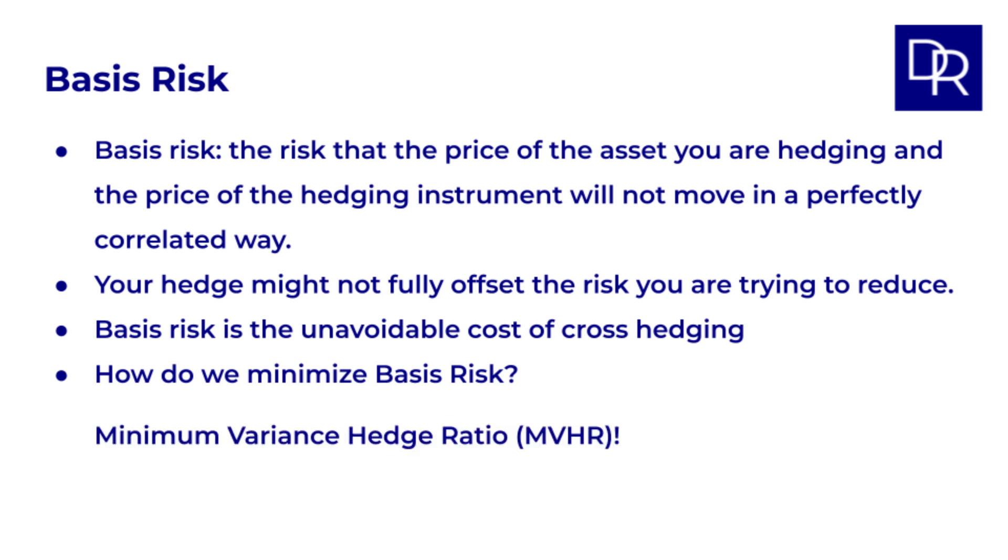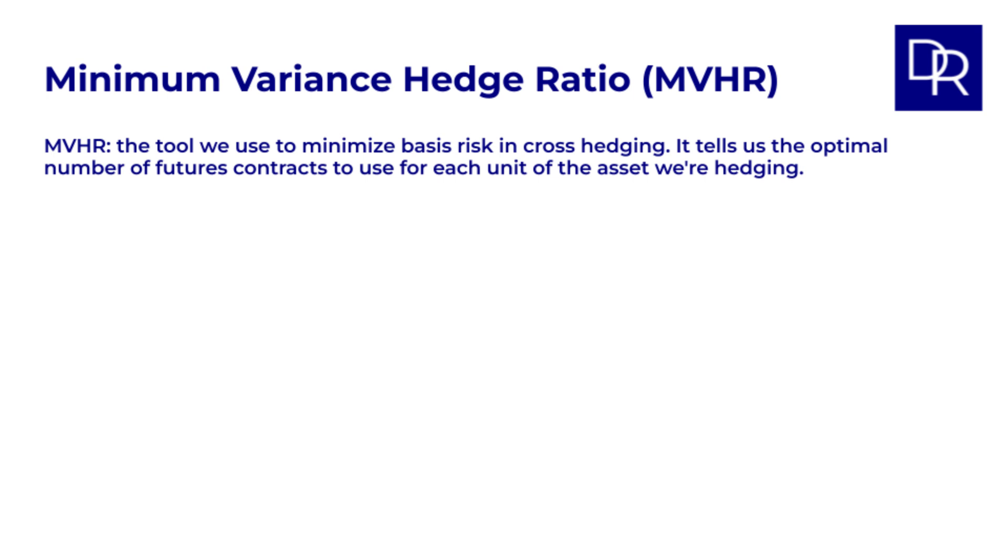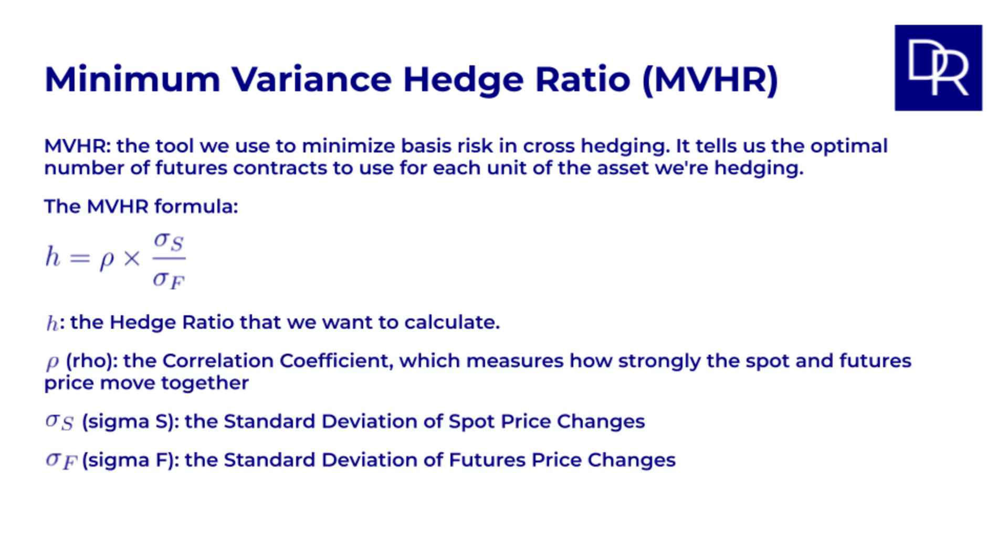That leads us to the minimum variance hedge ratio, MVHR. This is the tool we use to minimize basis risk at cross hedging. It tells us the optimal number of futures contracts to use for each unit of the asset we are hedging. It is not a naive 1 to 1 hedge, it is a carefully calculated ratio. The MVHR formula is this. H equals rho times sigma s over sigma f. Let's break this down. H is our hedge ratio. This is what we want to calculate.